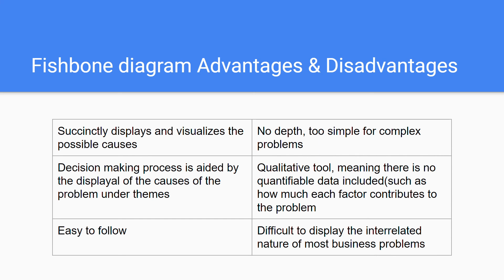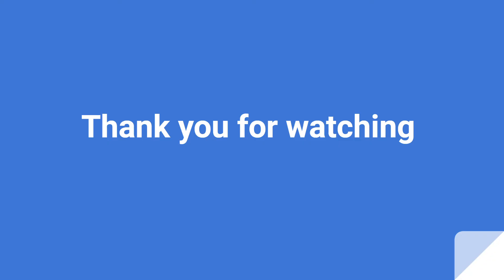The second disadvantage is that this is a qualitative tool, meaning there's no quantifiable data included — you cannot see how much each factor contributes to the problem. The last disadvantage is that it's difficult to display the interrelated nature of most business problems. Thank you for watching and I'll see you in my next video.